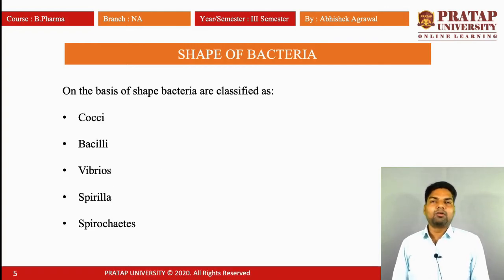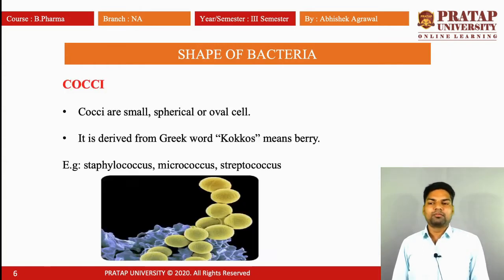Third is the shape of the bacteria. On the basis of shape, bacteria are classified as: first, cocci; second, bacilli; third, vibrios; fourth, spirilla; and fifth, spirochetes. Cocci are very small, spherical and oval in shape. The name is derived from 'coccus' which means berry. Examples are Staphylococcus, Micrococcus, and Streptococcus. The structure of cocci contains oval cells, spherical cells, or small cells.